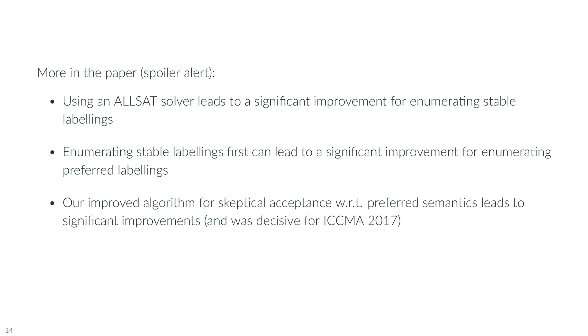This was just a teaser of the 40 pages of the paper. In particular, if you are working in argumentation, we showed that using an ALLSAT solver leads to significant improvement when enumerating stable labellings. Enumerating stable labellings first leads to significant improvement when enumerating preferred labellings, and some of the algorithm variances, in particular for skeptical acceptance with respect to preferred semantics led to significant improvements, and they were decisive for winning the 2017 preferred semantics tracks of the International Competition on Computational Models of Argumentation.